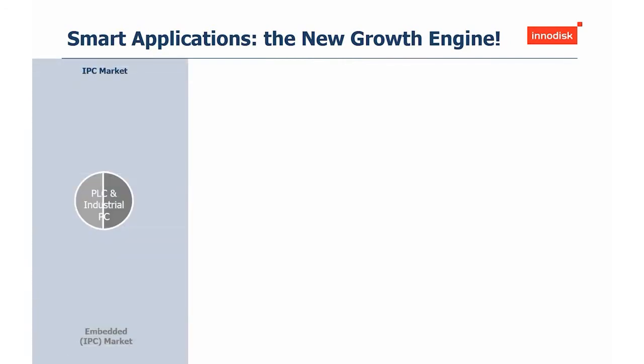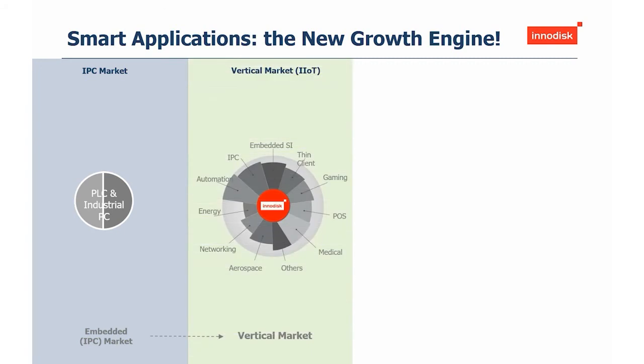Smart applications are the new growth engine. To give you an idea of how InnoDisk is approaching the market, we have a slide showing what we can do and how we try to implement it. The IPC market is the standard embedded IPC market that InnoDisk is focusing on. Inside this market there are vertical markets: IoT, embedded ASI, thin client solutions, medical solutions, aerospace solutions. There are a bunch of different vertical markets that InnoDisk creates products for and wants to penetrate.